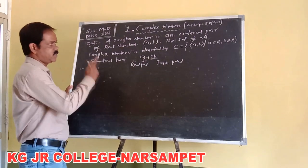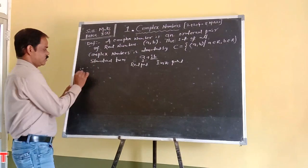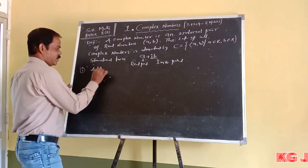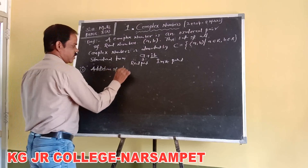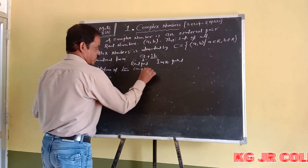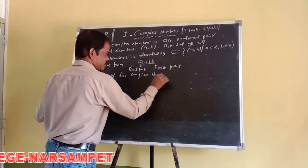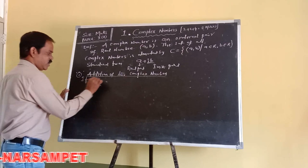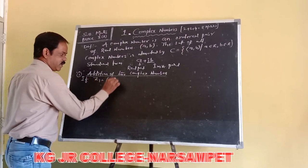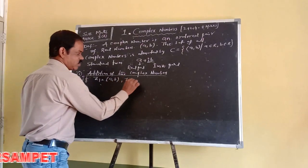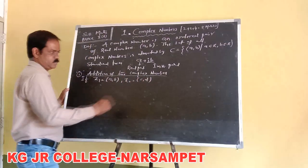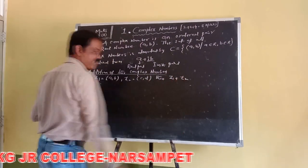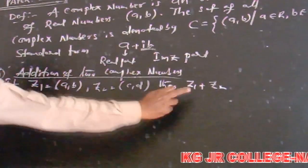Next, in this complex number chapter we have learned some properties. First of all, how to add two complex numbers — addition of two complex numbers. Let us consider: suppose Z1 is equal to the ordered pair (a, b) and Z2 is equal to the ordered pair (c, d).